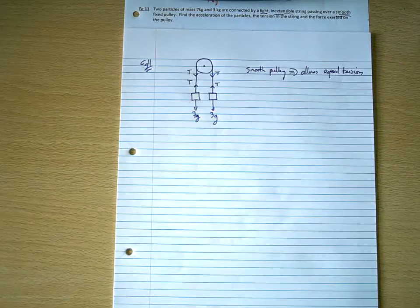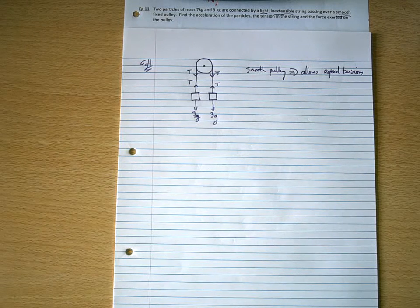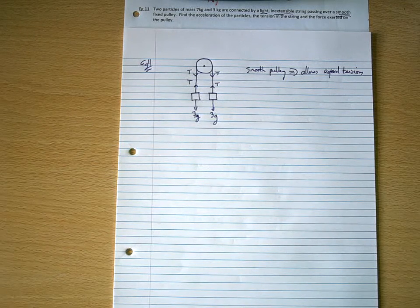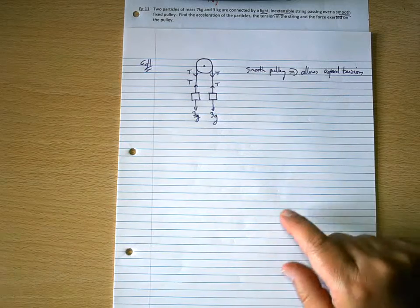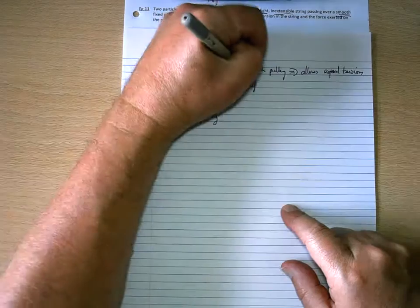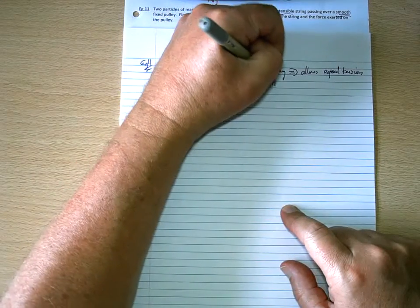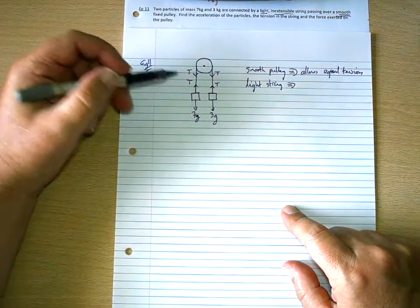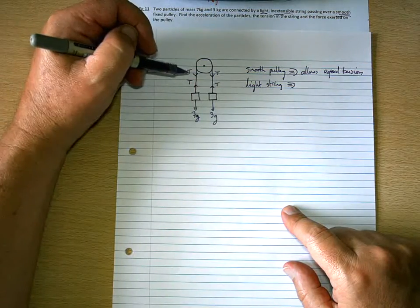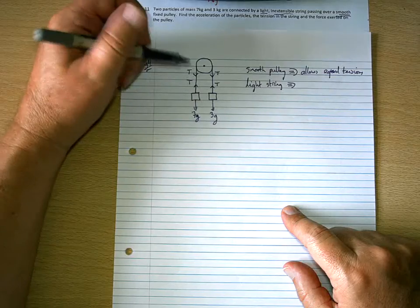Okay, so if an exam, the question asks you, you know, what assumptions have you made, or what does that allow? If it's a smooth pulley, it allows equal tensions. Because the string is light, that means that the mass of the string is negligible.